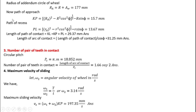Now we calculate the path of approach KP and the path of recess PL. Using the respective formulas and substituting all values, we get the numerical values for KP and PL. The length of path of contact KL is the sum of KP plus PL, and adding these two values gives us the final answer for the length of path of contact.